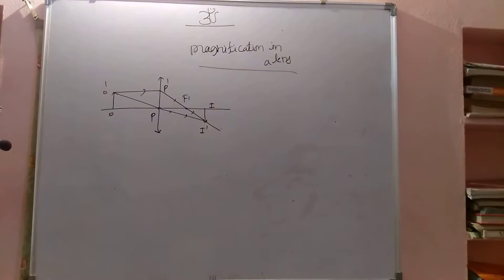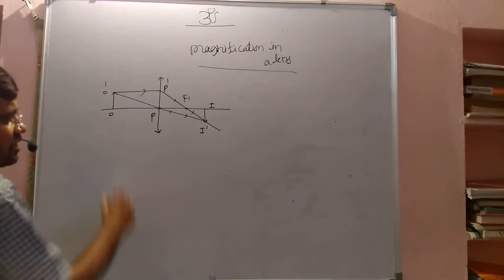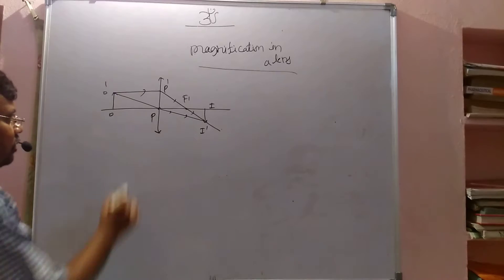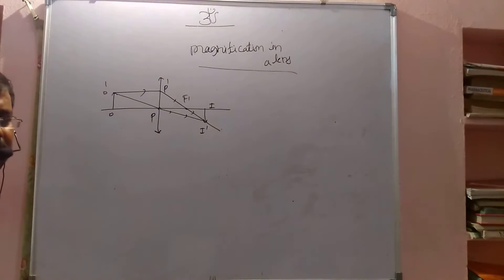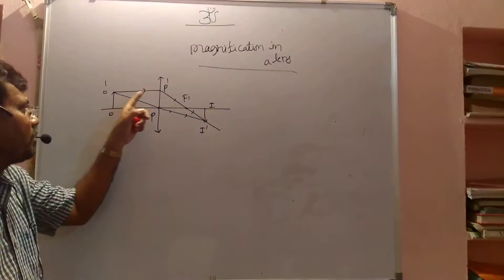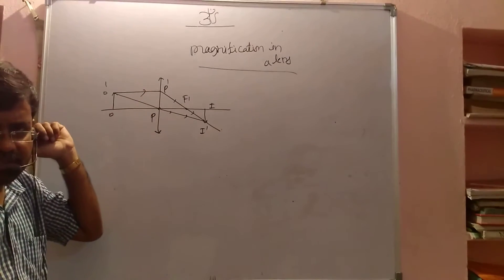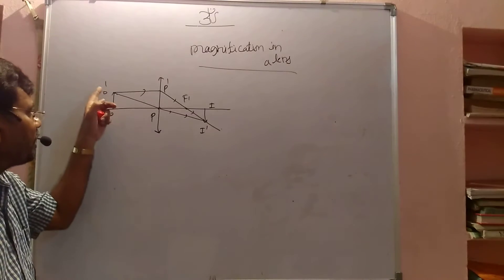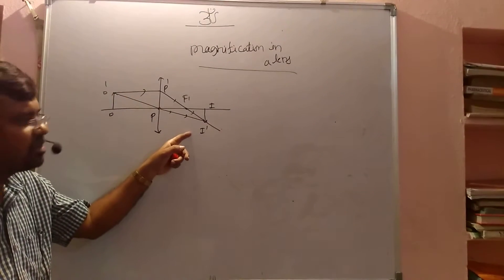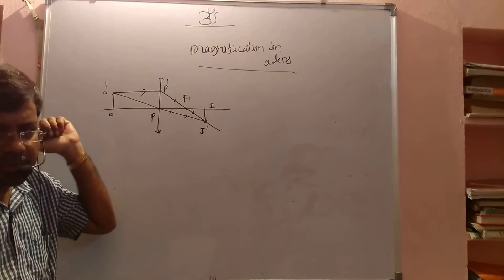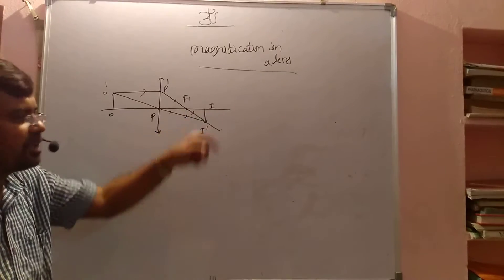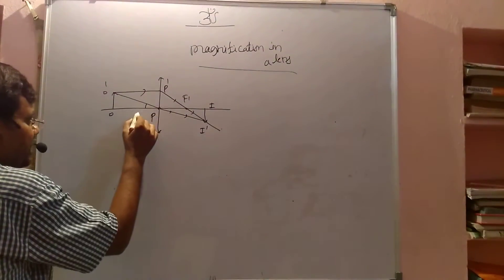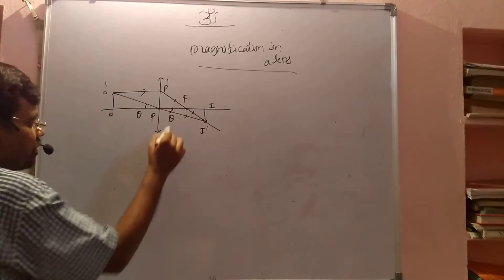Here O' is the object — the tip of the object — from which two beams of light emerge. One beam comes parallel to the principal axis and after refraction goes from the focal point. Another beam goes through the optic center. These two beams meet to form the image. Assuming this angle is theta, automatically the other angle also becomes theta.